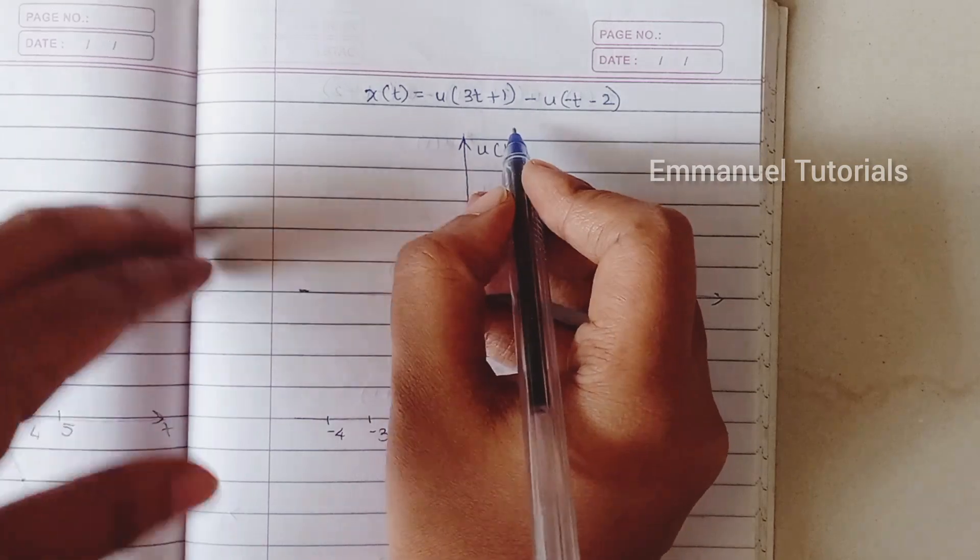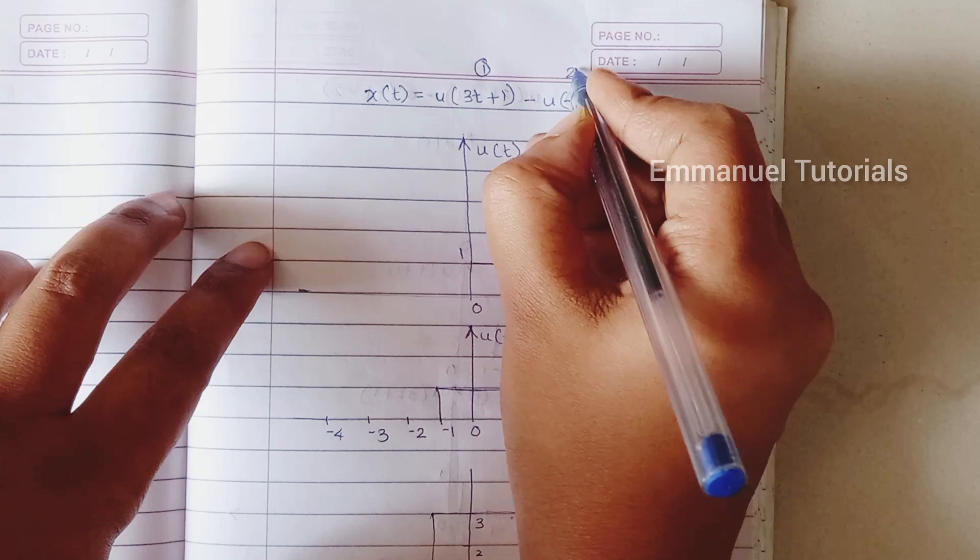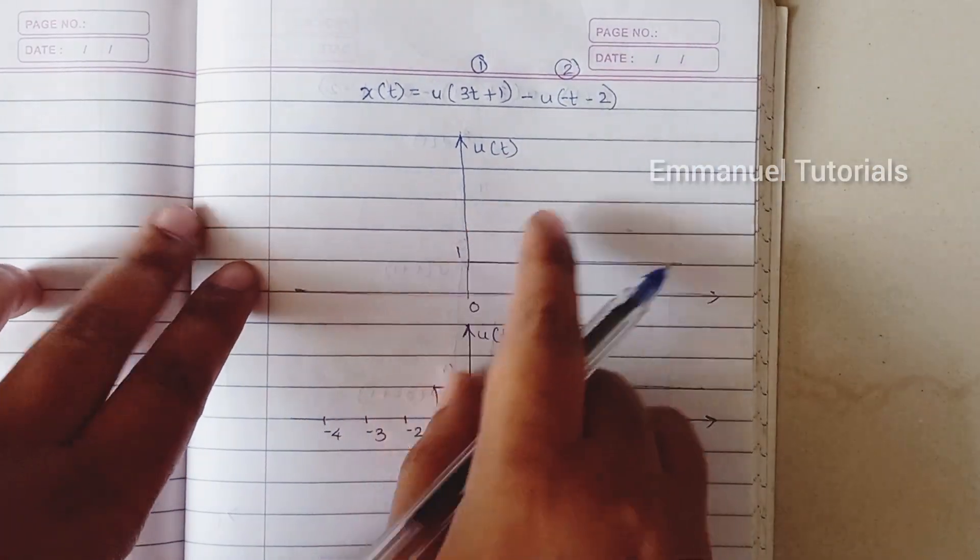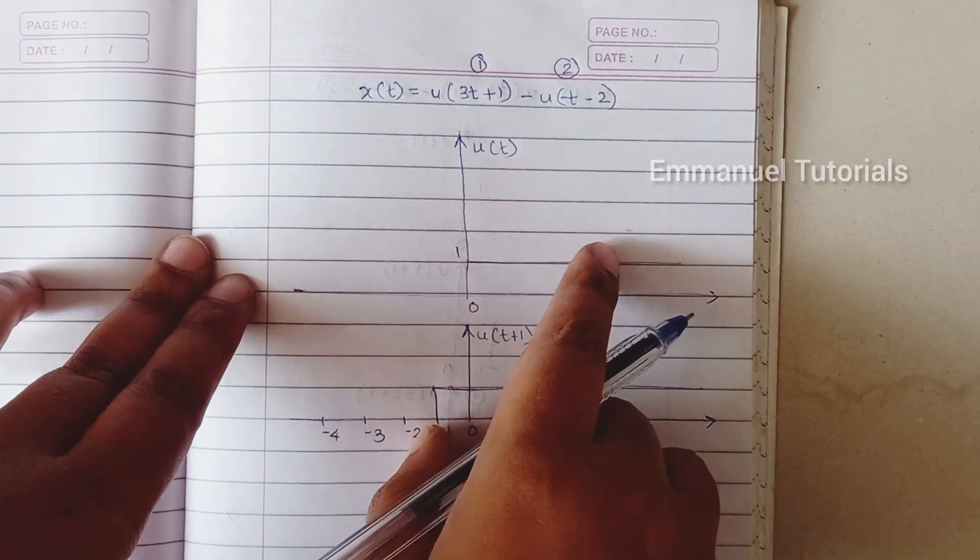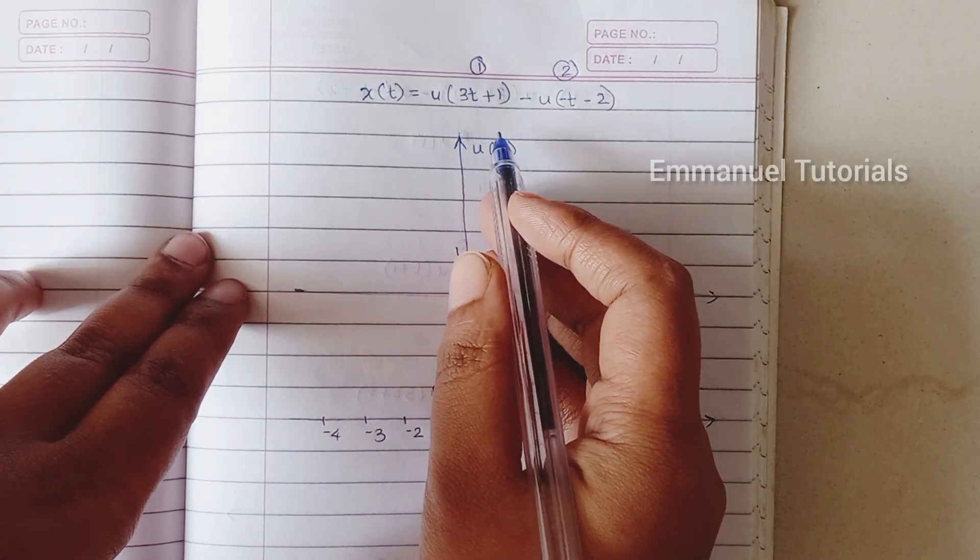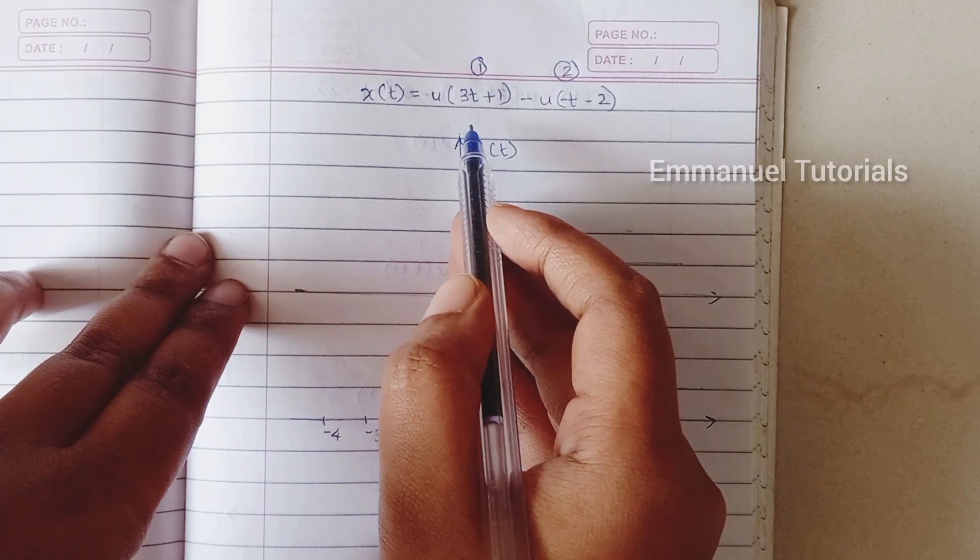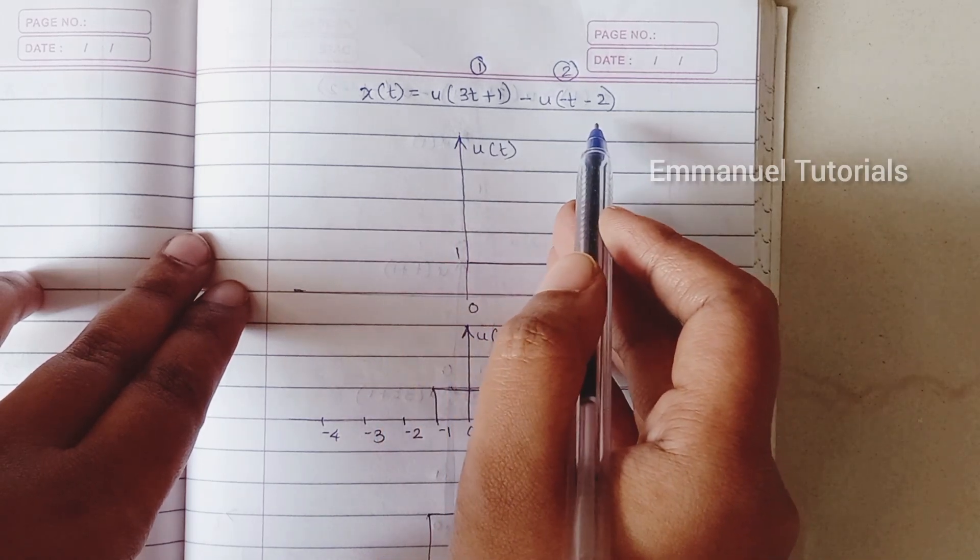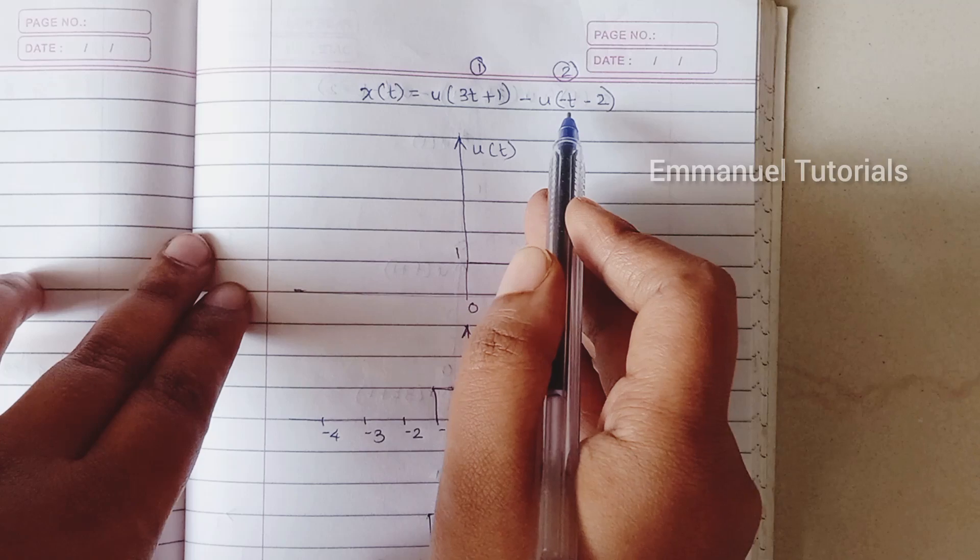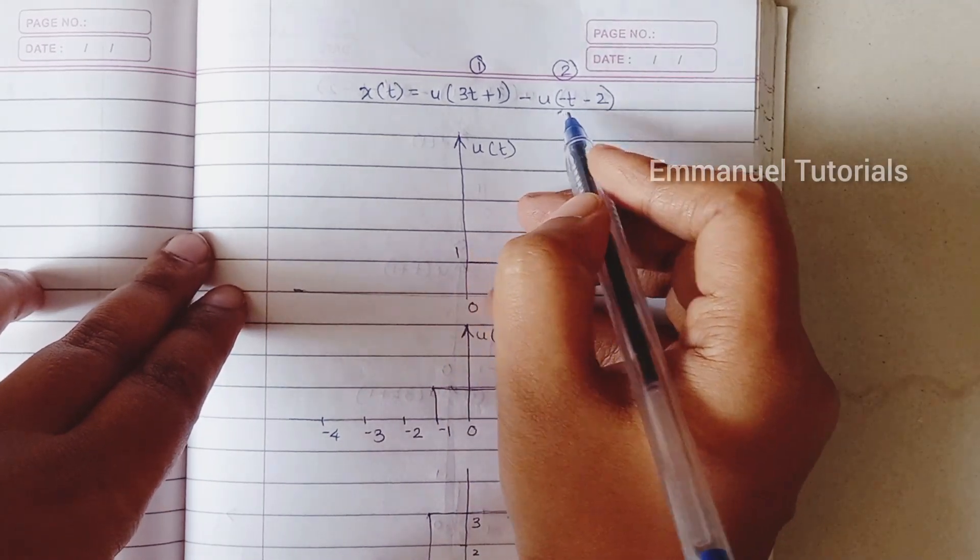Here we have a unit step signal kind of example. Let's divide the signal into two parts so that it becomes easier for us to get the result. So first we have u of 3t plus 1 which is a shifted and time scaled version of the unit step signal. Similarly the second part is also shifted and time reversed version of the unit step signal.